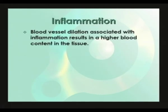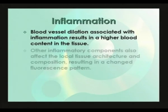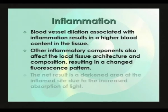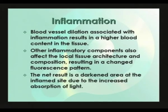Blood vessel dilation associated with inflammation results in a higher blood content in the tissue. Other inflammatory components also affect the local tissue architecture and composition, resulting in a changed fluorescence pattern. The net result is a darkened area at the inflamed site due to the increased absorption of light by the blood.